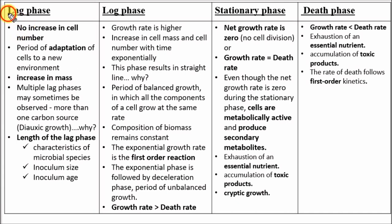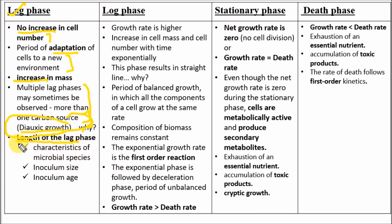In the lag phase there is no increase in cell number; it is a period of adaptation to the new environment with increase in cell mass. Multiple lag phases can occur when more than one carbon source is present — this is known as diauxic growth. The microorganism utilizes one preferential substrate first, and when that is exhausted, it utilizes the second substrate. The length of the lag phase depends mainly on three factors: characteristics of the microbial species, inoculum size, and inoculum age. You can minimize the lag phase by varying the inoculum size.